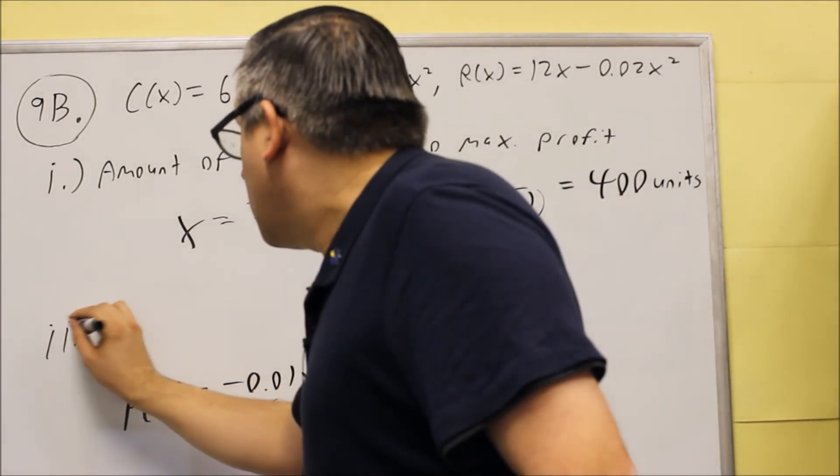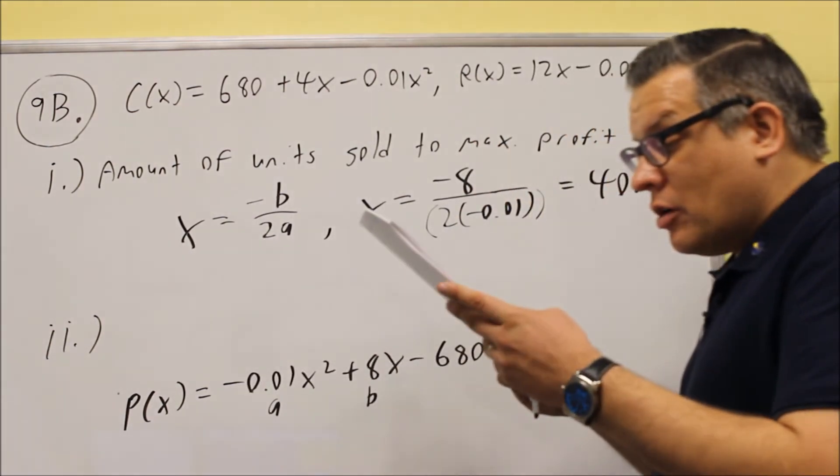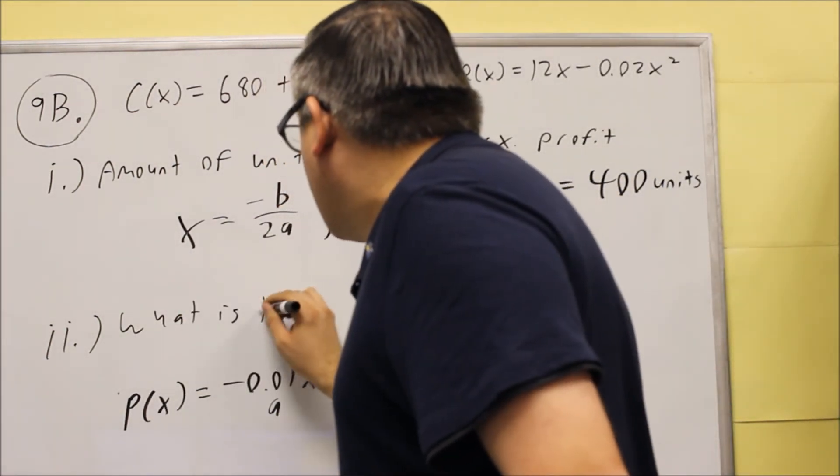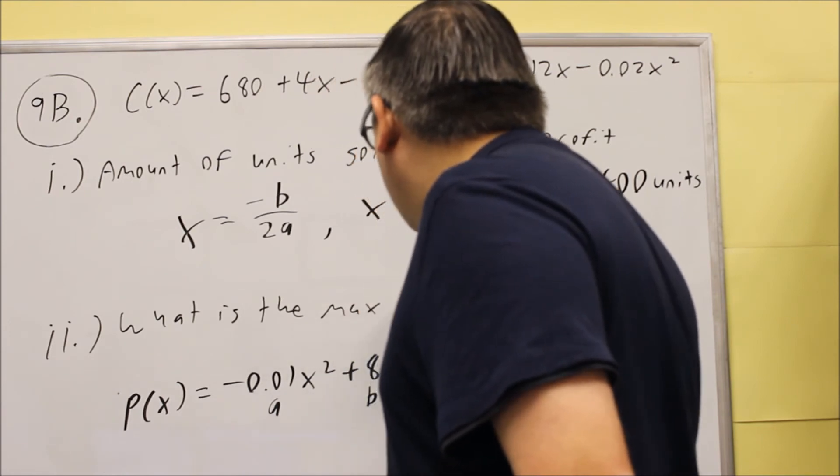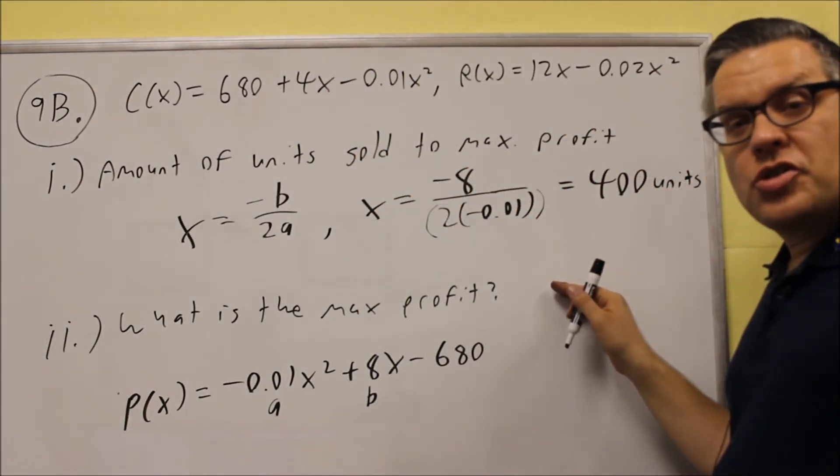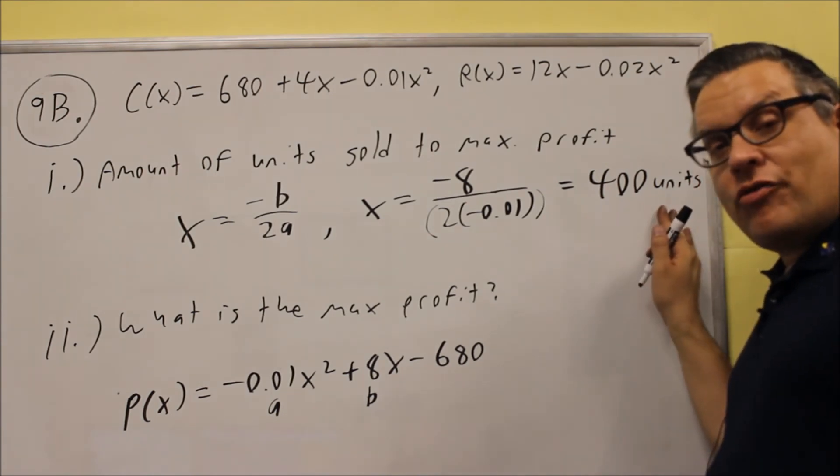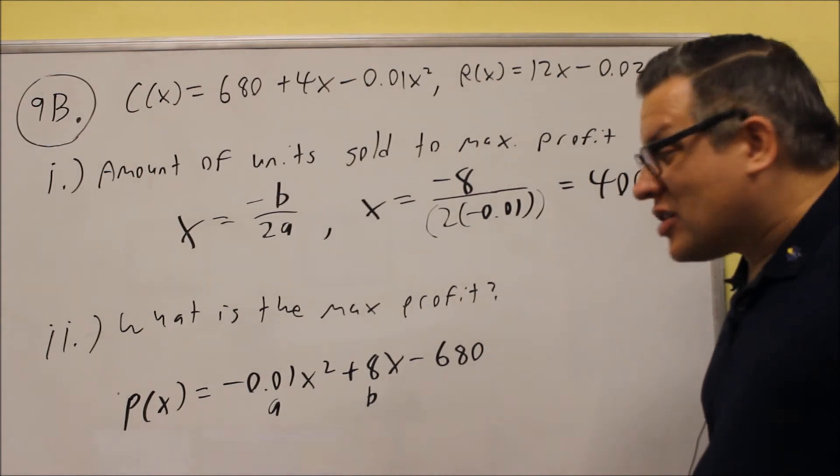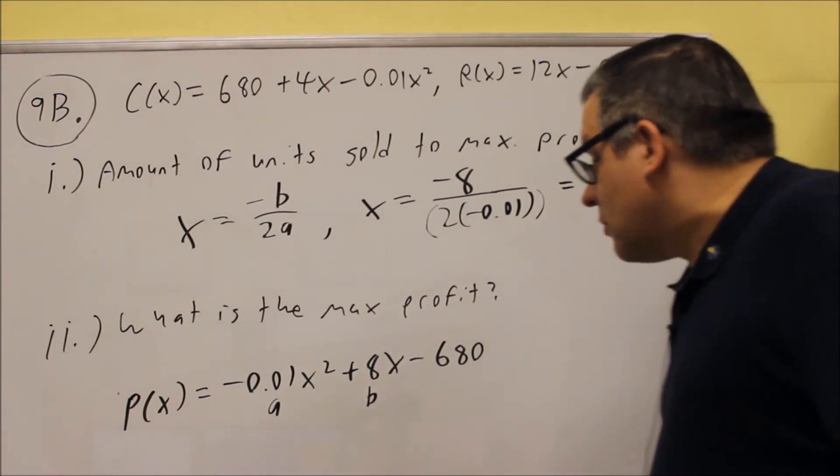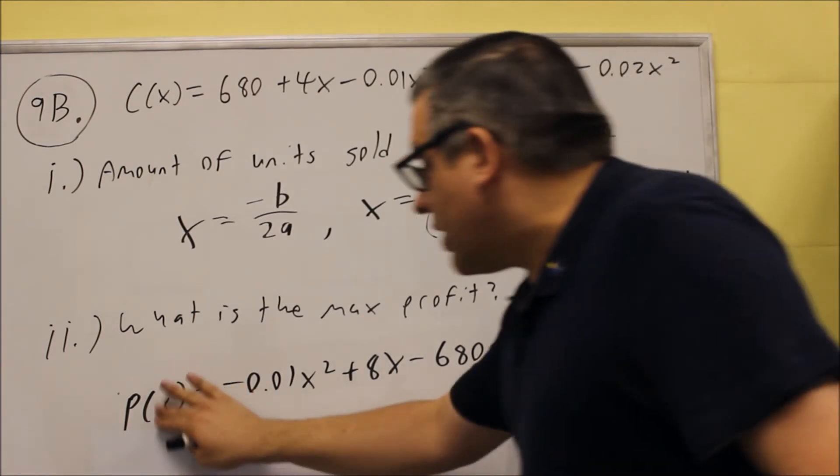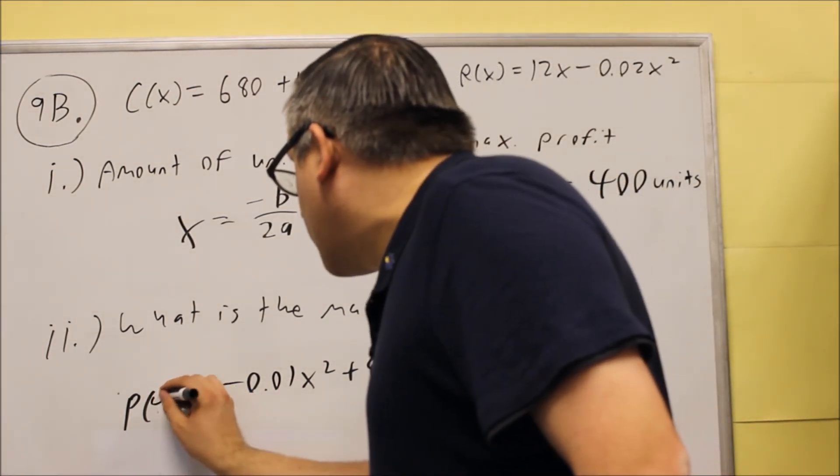So double i asks you for what is the maximum profit. What you're going to do is you're going to take your answer that you got here, 400 units, and you're going to put it into this formula in place of all the x's. You're going to use the same profit formula that we had before, except that we just replaced the x's with 400, so we'll put that in here.